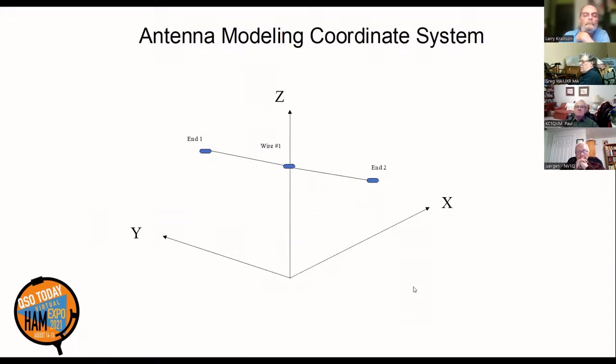We have to describe to the software the orientation of the antenna with respect to ground. Here you see the standard XYZ Cartesian coordinates with a single wire labeled as wire number one. That wire has an end one and an end two, located some height above ground Z high, and located along the Y axis. I could have just as easily located that wire along the X axis, but modeling along one axis is easy.